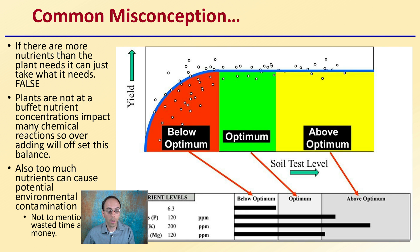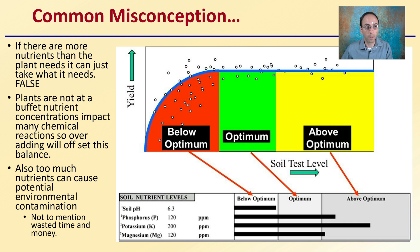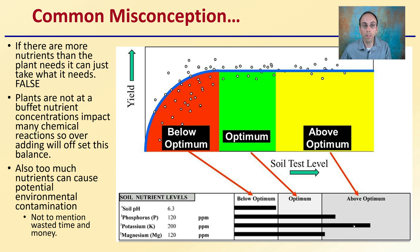A common misconception, as this graph helps explain, is the idea that if there are more nutrients than the plant needs, it can just take what it needs. That's a false statement. This is a common misconception — growers think, 'I'll give it some more, and if it doesn't need that much, it'll just ignore that.' But plants really don't have that option. Plants are not a nutrient buffet; concentrations impact many chemical reactions, and over-adding will offset this balance.